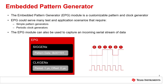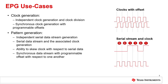The embedded pattern generator module is a customizable pattern and clock generator. The EPG could serve many tests and application scenarios that require simple pattern generators or periodic clock generators. The EPG module can also be used to capture incoming serial streams of data, and can generate clock and custom data patterns with minimal CPU intervention. EPG clock and pattern generation modules can be used for independent clock generation and clock division, synchronous clock generation with programmable offsets, and independent serial data stream generation.